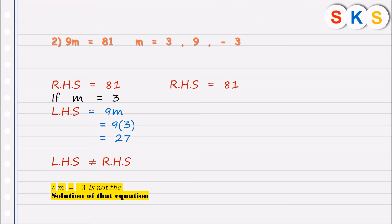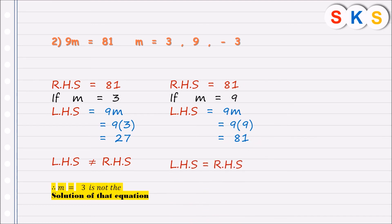For m equals to 9, we substitute into the left hand side: 9 into 9 is 81. The right hand side is also 81, so LHS equals RHS. This value makes both sides equal. Hence, m equals to 9 is the solution of that equation.